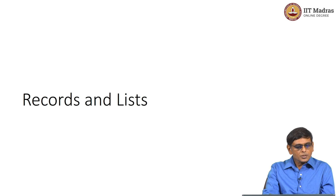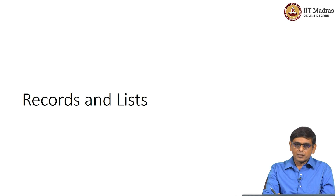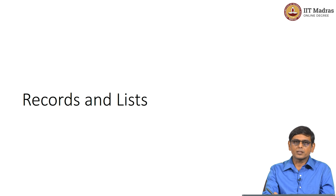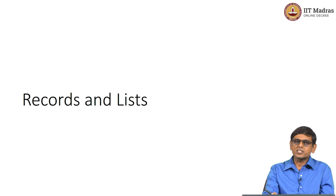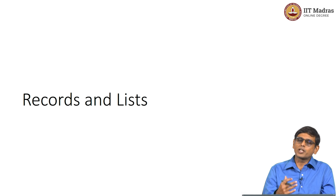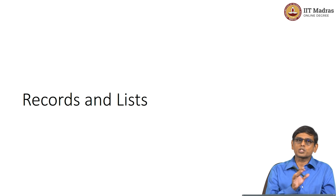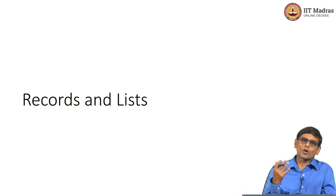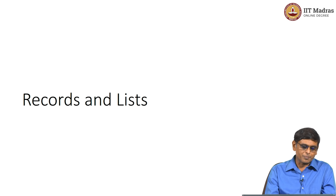So far what we have seen is basically some basic data types. The basic data types were Boolean, which has true and false values; integers, which had negative, zero, or positive values; and the character data type — and we saw subtypes of this. Then we made the data type called strings, which was a sequence of characters, and we saw a lot of subtypes of the strings data type.